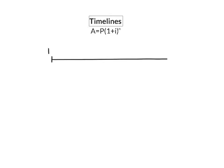A timeline starts when no time has passed and we indicate that with T0. It can then be broken up into any type of period depending on the question, and time passes on this timeline in terms of that specific period. The value of the account or the value of the original amount as it accumulated interest can then be determined at any point on this timeline. If we know the starting value of the account, we can determine the value of the account at any point on the timeline by adding the interest for the time that has passed.